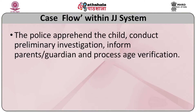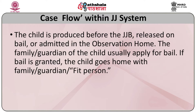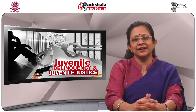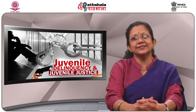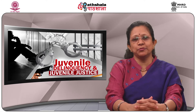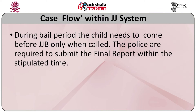The police apprehend the child, conduct preliminary investigation, inform parents and guardian, and the process of age verification happens. The child is then produced before the Juvenile Justice Board. The child may be granted bail or placed in the observation home. All children are entitled to bail — under certain specific conditions bail may be denied, as given in the Juvenile Justice Act. Once bail is granted the child goes back home, and during the bail period the child need not come before the Juvenile Justice Board unless specifically called for.